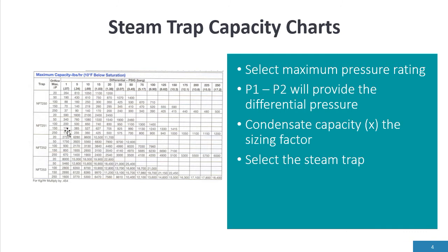We have to come down to the next model steam trap with 150 psi, and the capacity is now 990 pounds per hour. Therefore, we come up with the correct steam trap selection.